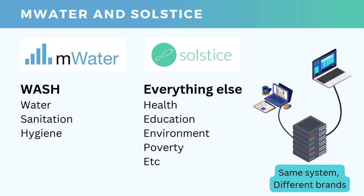Solstice is really the sister platform for everything else. We see users using that for health projects, education work, environment, poverty alleviation, and much more. It's really the same system, but with different branding. For example, if you are working on the environment or education and really nothing to do with WASH, it's difficult to tell your colleagues 'let's use mWater to track this project about getting girls better education.' Instead, Solstice might be the better choice there.